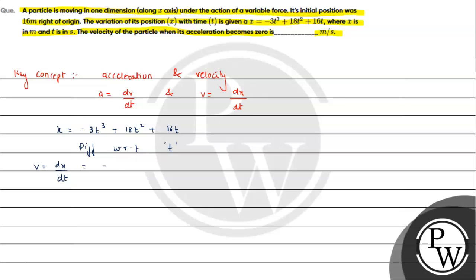So here we have the value as minus 9t squared plus 36t plus 16. This is the velocity expression. Now further we have acceleration. We will differentiate this expression with respect to t. Acceleration will be nothing but dv by dt, and it will be minus 18t plus 36.